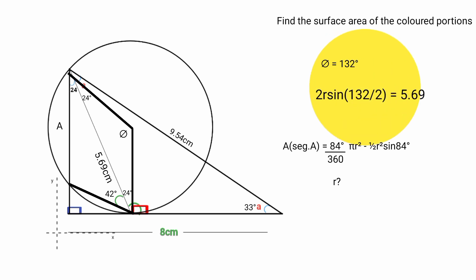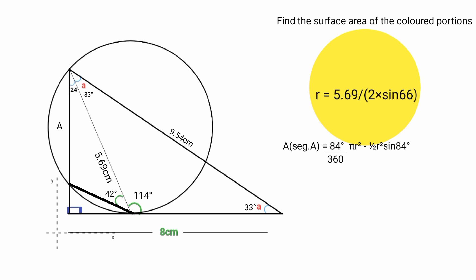Substituting: 2r sine(132 over 2) equals 5.69. 132 divided by 2 is 66, so 2r sine 66 equals 5.69. Making r the subject: r equals 5.69 over 2 times sine 66 degrees, which if you press your calculator equals approximately 3.11. So r equals 3.11 cm.